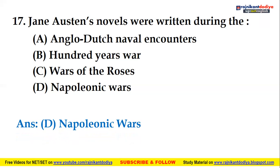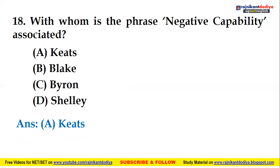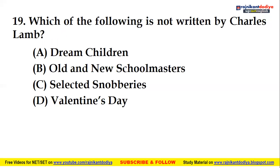Next: with whom is the phrase 'Negative Capability' associated? Was it Keats, Blake, Byron, or Shelley? The right answer is Keats — John Keats. The phrase 'Negative Capability' is associated with John Keats.